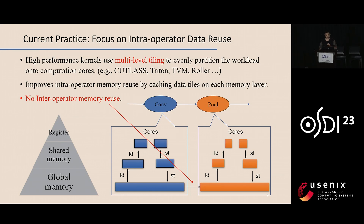Currently, there are a number of works that already utilize this memory hierarchy, but they majorly optimize within a single operator. These works — like CUTLASS, Triton, TVM, or Roller — use the multilevel tiling abstraction to evenly partition the workload onto computation cores. For example, a CTA block reads a block tile of data onto shared memory, and then each warp reads a subtile of data onto registers. This abstraction can generate high-performance kernels by improving single-operator memory reuse, but it cannot leverage optimization opportunities for inter-operator memory access.